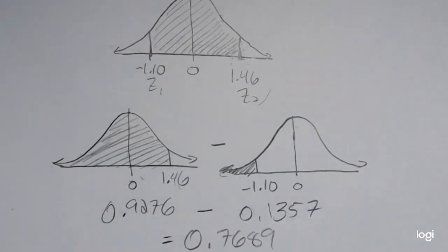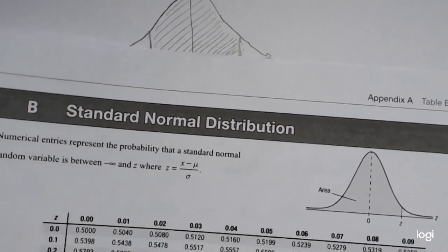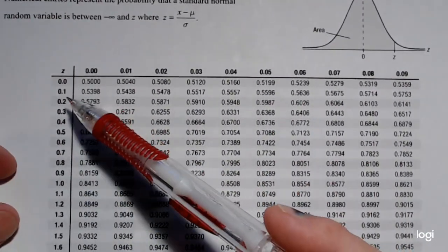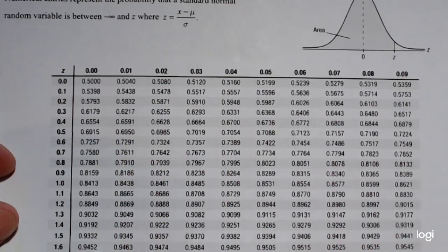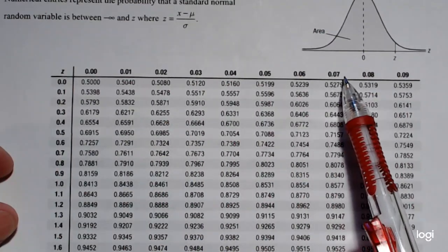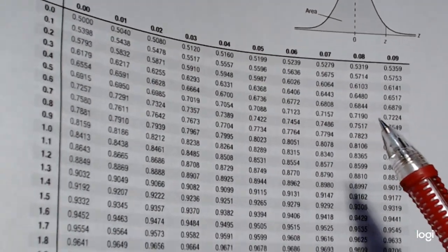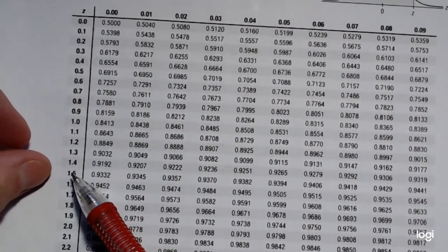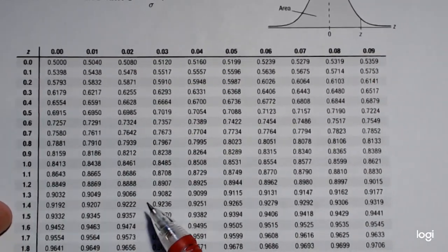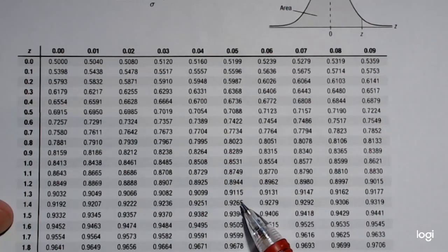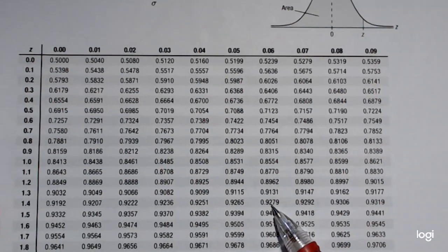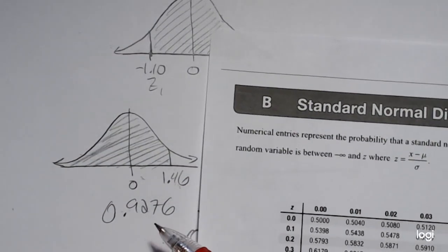Now, in a standard normal table, the z-scores are on the outside broken into two pieces. We have the units in tenth place along this first column and the hundredths place across this first row, and I need to intersect those. So for this first z-score of positive 1.46, I'm going to read down to 1.4 and over to 0.06. So that first area is 0.9279.